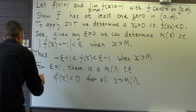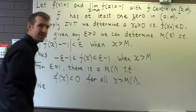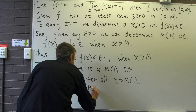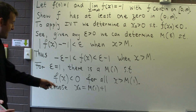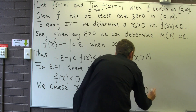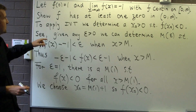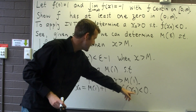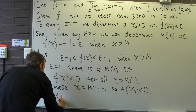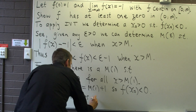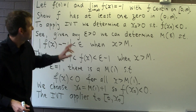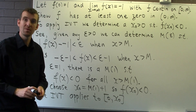So let's choose any point bigger than m of 1 — let's say x₀ equals m of 1 plus 1. Therefore f of x₀ has to be negative. We've now achieved what we wanted: we've determined a point where f is negative. So the Intermediate Value Theorem applies to this interval, and it means that f must have at least one zero strictly between 0 and x₀.